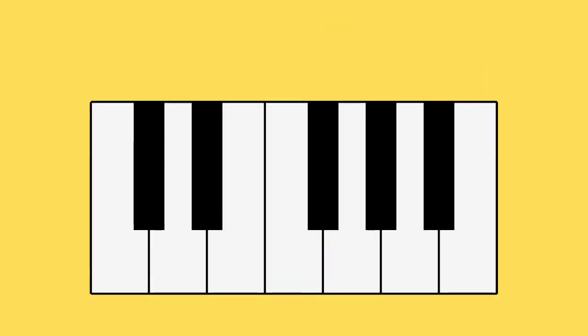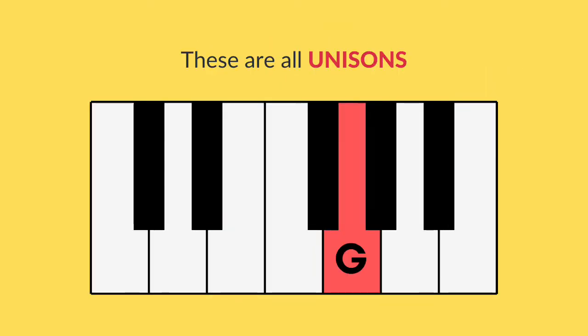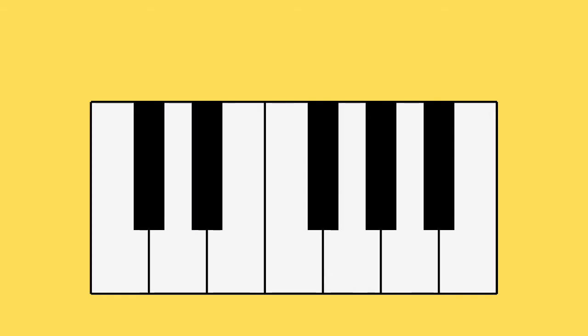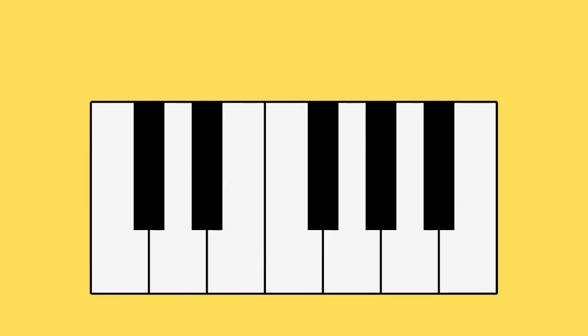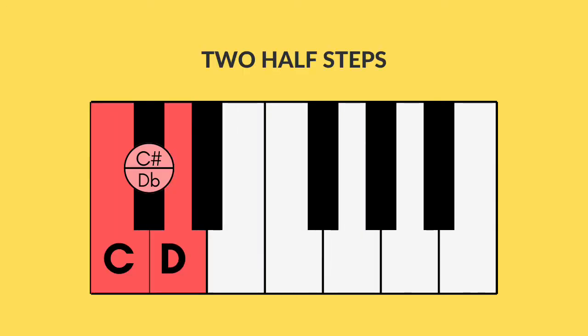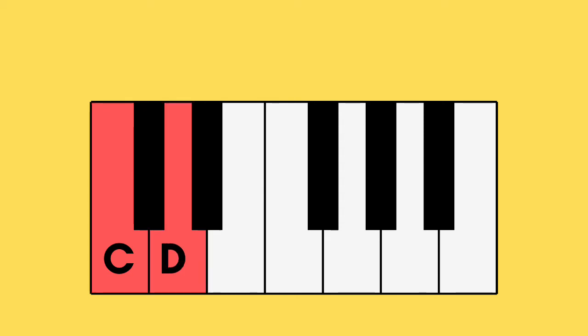So we have the unison, which is two of the same note. And we have the half step, which is two notes that are direct neighbors to each other. When we take two half steps and put them together, we get our next interval: the whole step.